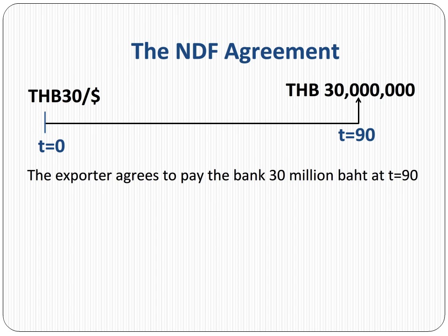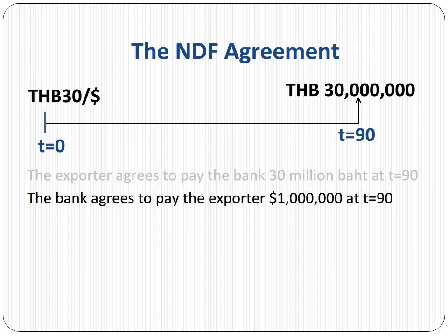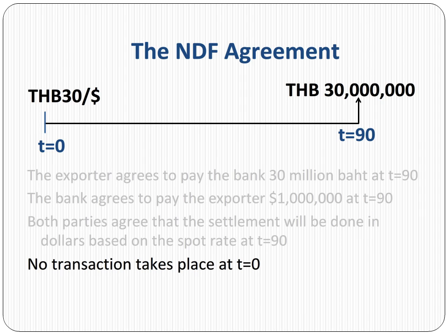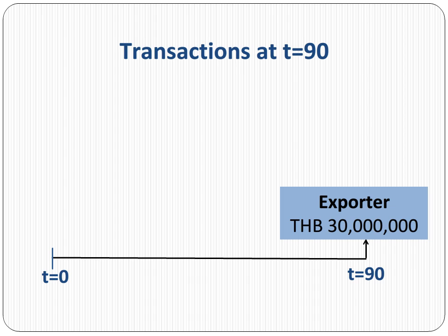Let's take a look at the timeline to visualize the cash flows. The exporter agrees to pay the bank 30 million baht at t equals 90. The bank agrees to pay the exporter 1 million dollars at t equals 90. Both parties agree that the settlement will be done in dollars based on the spot rate that prevails at t equals 90. No money is exchanged at t equals zero.